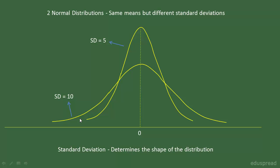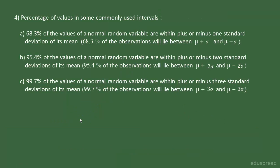I hope you are now clear that the two parameters of a normal distribution are mean and standard deviation, where mean determines the location of the distribution and standard deviation determines the shape of the distribution. The last property of normal distribution I am going to discuss is this: Part A says that if we have a normal random variable, then 68.3% of the values of that random variable are within plus or minus one standard deviation of its mean.